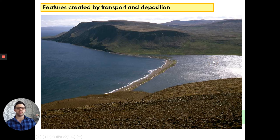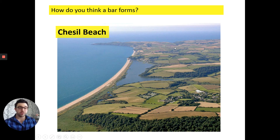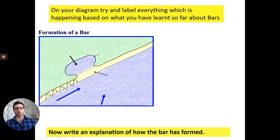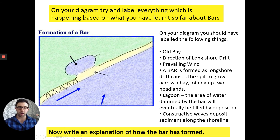What will happen if longshore drift continues along this coastline? It will create a landform called a bar. Chesil Beach is one of the most well-known examples of a UK bar. A bar forms in much the same way as a spit: longshore drift carries material along the land, and as it reaches a headland and finds a bay, the material comes down and eventually joins the other side.